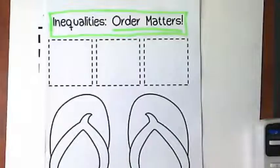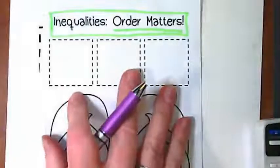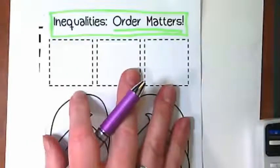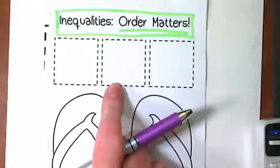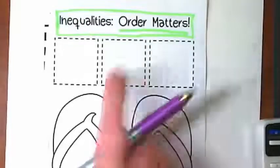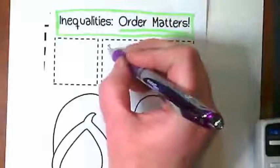In these three boxes we are going to put what an inequality has in it. It has three parts. What part is in the middle of an inequality? We have the symbol in the middle.